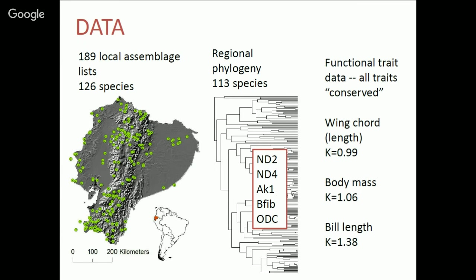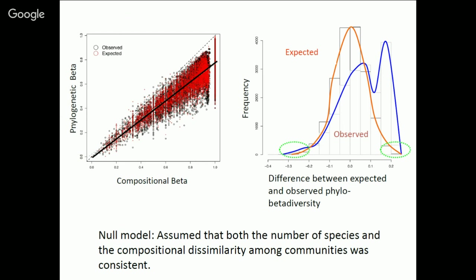We set out to look for these patterns and test these ideas in this Ecuadorian system. We have assemblages from about 200 local sites in Ecuador. We've got a regional phylogeny extracted from Jim McGuire's recent large phylogeny published on hummingbirds. We know that the functional traits that should influence species occurrence at high elevations are relatively conserved. So now we calculate beta diversity, using the phylogenetic Sorensen index introduced earlier. Given that there are species in common among communities, compositional and phylogenetic beta diversity should be highly related — and indeed they are, correlated at about 70%.